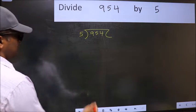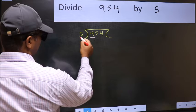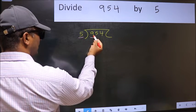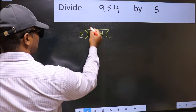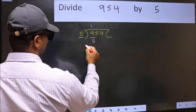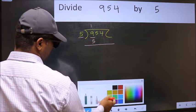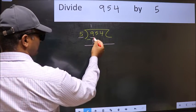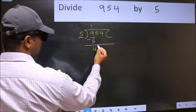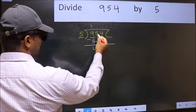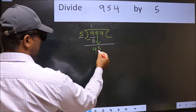Next, here we have 9 and here 5. A number close to 9 in 5 table is 5 once 5. Now you should subtract. 9 minus 5, 4. After this, bring down the beside number.